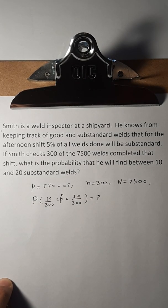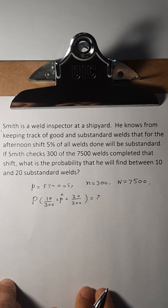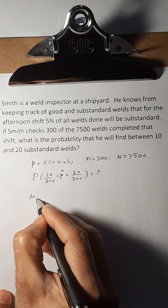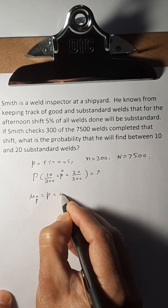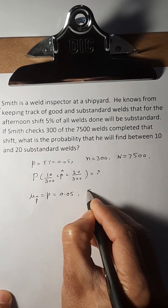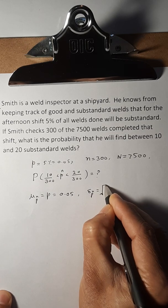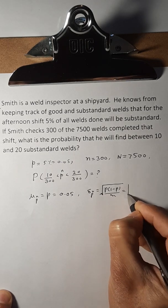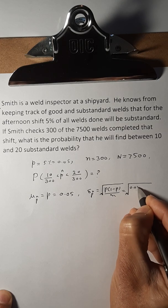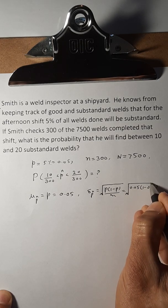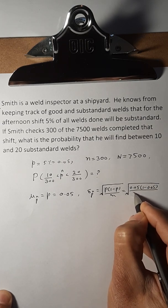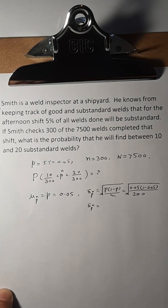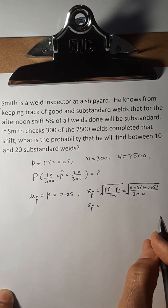In order to answer this question, first we have to find the sampling distribution for the proportion. That's mu p-hat and sigma p-hat. We know that mu p-hat is equal to P, and in this case that is 0.05. And then sigma p-hat, that is square root of P times 1 minus P divided by n. So just plug in this one: square root of 0.05 times 1 minus 0.05 divided by n, so n here is 300. And in this case, sigma p-hat turns out to be 0.01258.